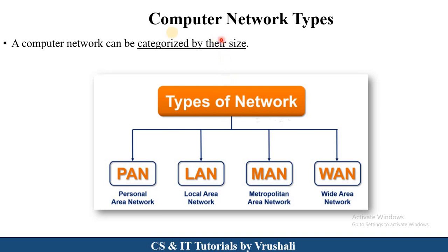The next topic is computer network types. There are four types of computer network: first, PAN — Personal Area Network; LAN — Local Area Network; MAN — Metropolitan Area Network; and WAN — Wide Area Network. All these computer network types are categorized by their size.